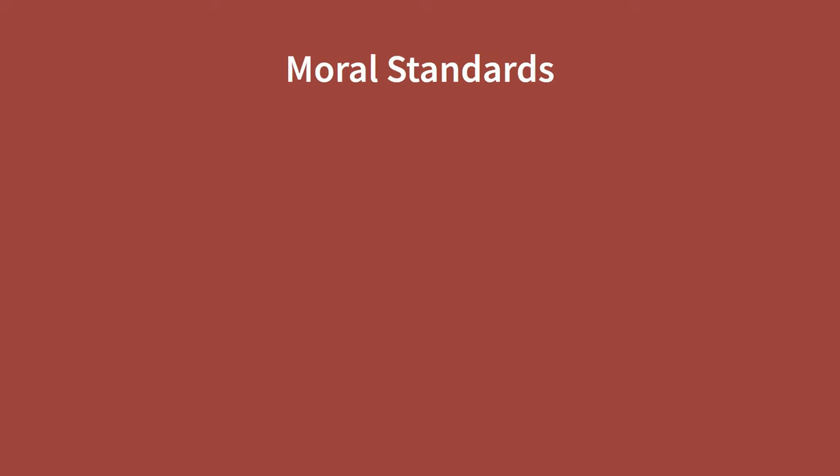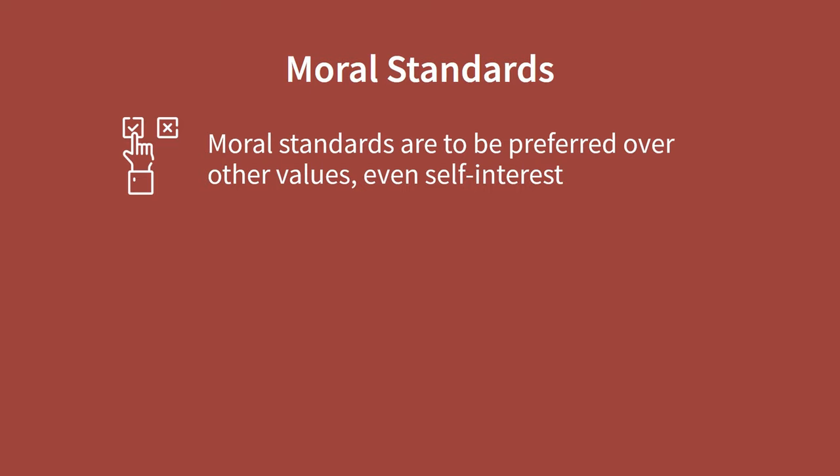Number 3. Moral standards are to be preferred over other values, even self-interest. Being honest, for instance, is to be preferred over cheating, although cheating can help me graduate.